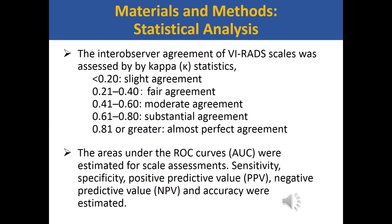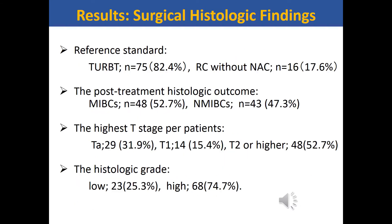The inter-observer agreement of VRATS scales was assessed by KAPPA statistics. The areas under the ROC curves were estimated for scale assessments. Sensitivity, specificity, positive predictive value, negative predictive value, and accuracy were estimated. Surgical histologic findings are shown here: 48 had MIBC and 43 had NMIBC.